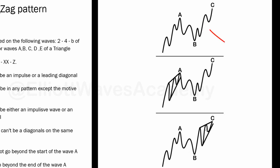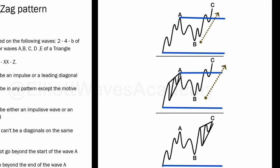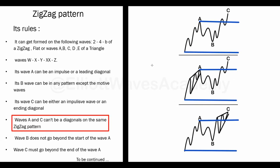Wave C, as it can be an impulsive wave, it can also be a diagonal pattern. Whether we have a diagonal in our zigzag or not, wave B should not exceed the start point of wave A — the wave B cannot push the price beyond the start of wave A — while wave C should push the price to exceed the point that represents the end of wave A. So wave B should not exceed the beginning of wave A, and wave C should exceed the end of wave A.